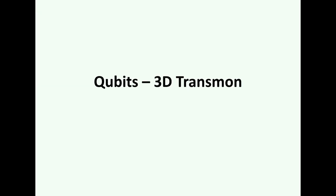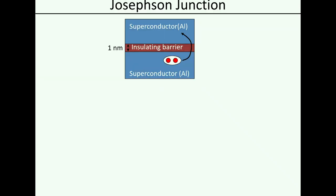That brings me immediately to how we do qubits. The nonlinearity in superconducting circuits is realized with the so-called Josephson junction — such a junction is nothing else but a superconductor-insulator-superconductor sandwich. This insulating barrier is very thin, about a nanometer, typically aluminum oxide. Cooper pairs can tunnel completely dissipation-free across this barrier, and you can look at the Josephson equations to figure out what energy is associated with this tunneling.